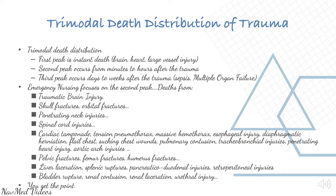Now, trimodal death distribution of trauma is very important to understand. The first peak is instant death from brain, heart, and large vessel injury. The second peak occurs from minutes to hours after the trauma. The third peak occurs days to weeks after the trauma.